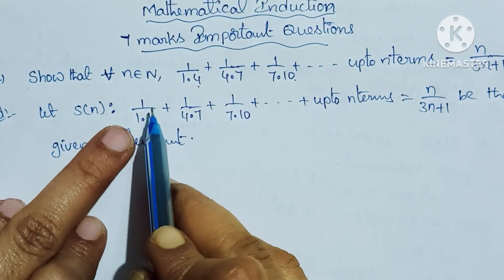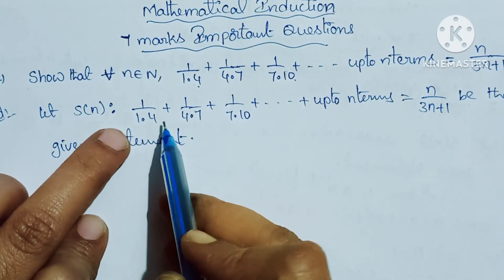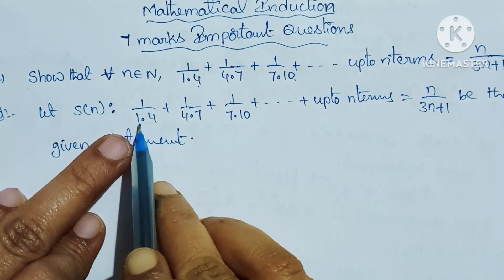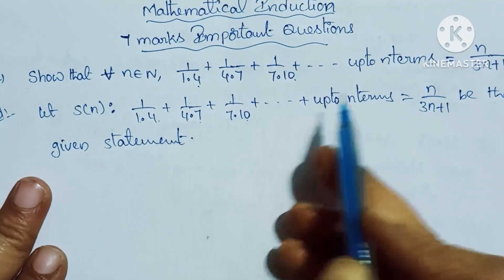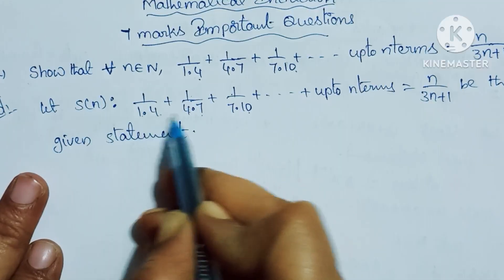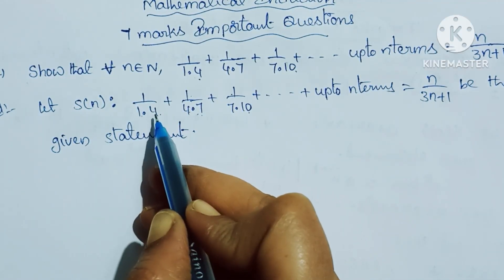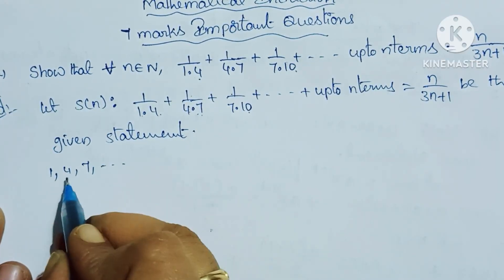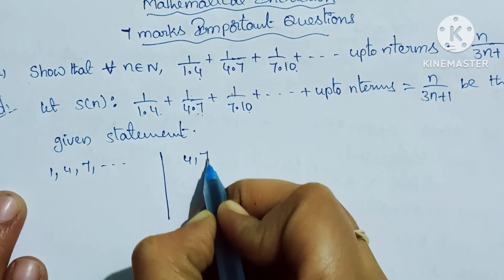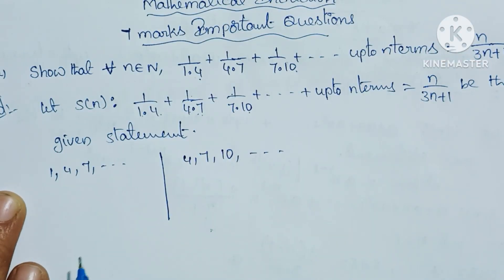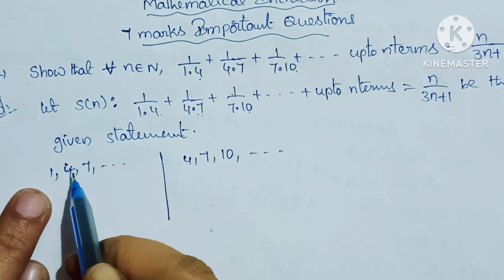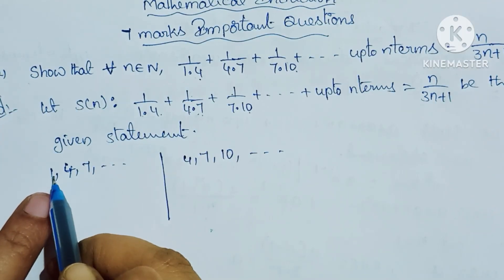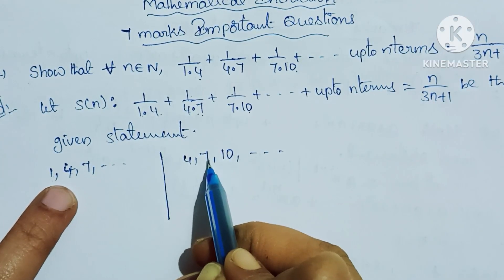We will find out the denominator terms. Every term has a common structure — the denominator values are 1×4, 4×7, 7×10. Looking at the first series: 1, 4, 7, 10 and so on up to n terms. The differences are: 4 minus 1 is 3, 7 minus 4 is 3, 10 minus 7 is 3. So the common difference is 3.